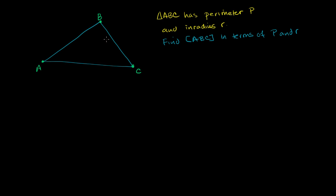We're told that triangle ABC has perimeter P and inradius R, and we want to find the area of ABC in terms of P and R. We know that the perimeter is just the sum of the sides of the triangle, or how long a fence would have to be if you wanted to go around the triangle.